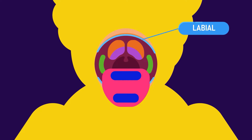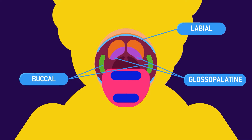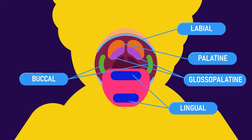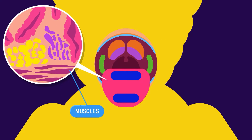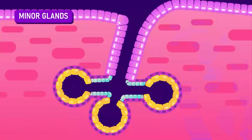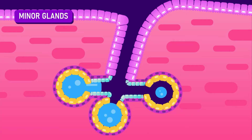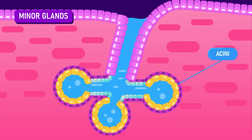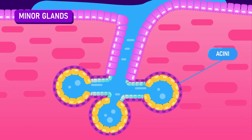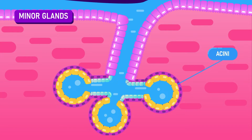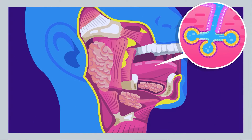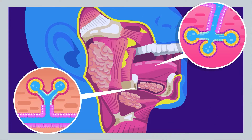The minor glands are grouped into five areas: labial, buccal, glossopalatin, palatin, and lingual glands. They blend with the muscle fibers in the submucosa. In the minor gland, the functional secretory unit of the gland — the acini — produces saliva that can directly flow along its own excretory duct, or combine with the duct of other minor glands.